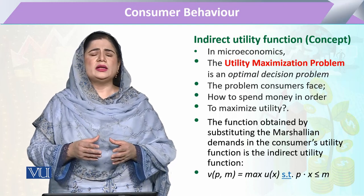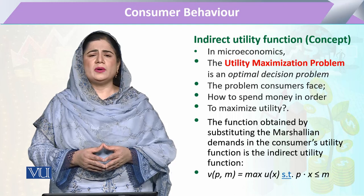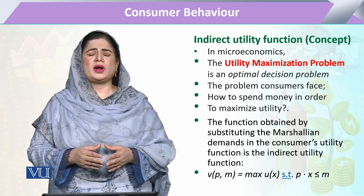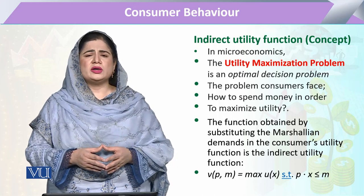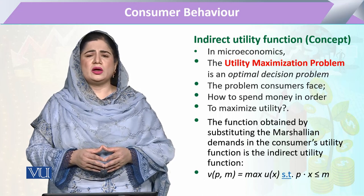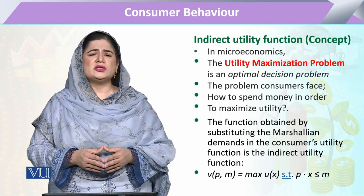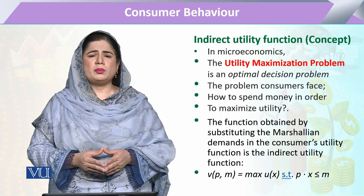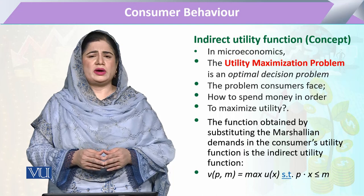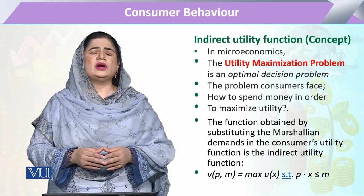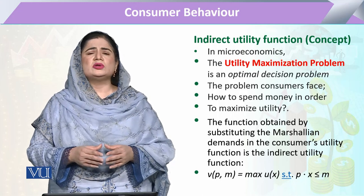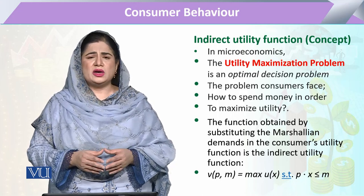When we describe the demand of the consumer, it is a function of the price of that commodity, the price of other commodities, and the expenditure that the consumer is going to incur. We maximize utility through the price of commodity X, the price of commodity Y, and then observe how demand for commodities changes with a change in the expenditure function.